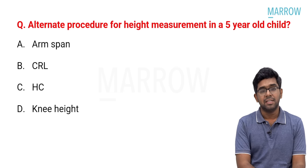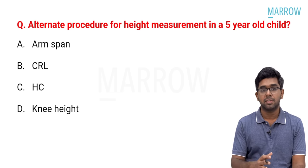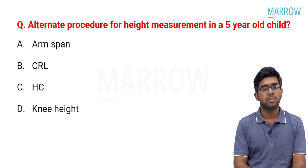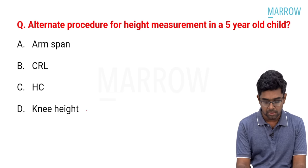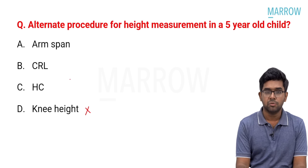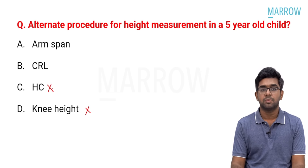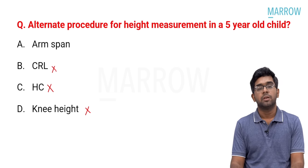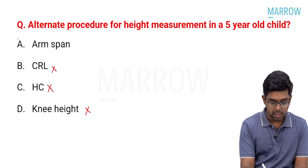Knee height measurement — where we make the child sit and measure sitting height — is very inaccurate and cannot be used as an alternate for height measurement. Head circumference is not related to the question and is automatically out. Crown-rump length is more for fetal measurement and not after-birth measurement. Eliminating all these options, the best answer is arm span.